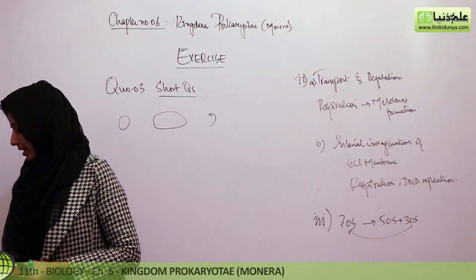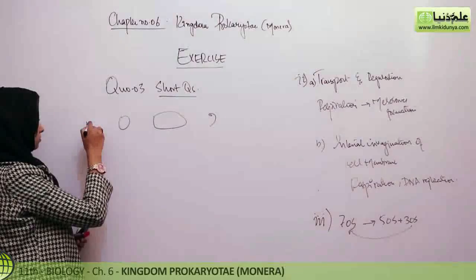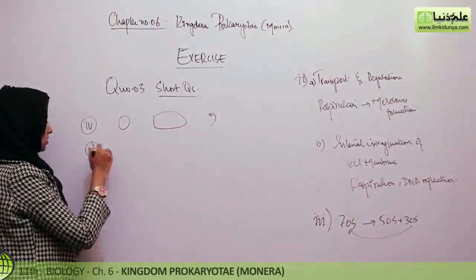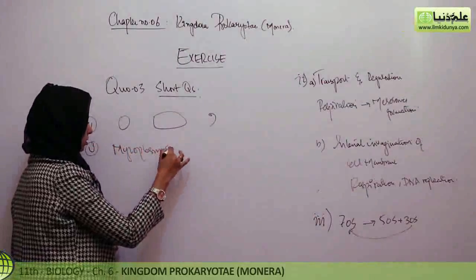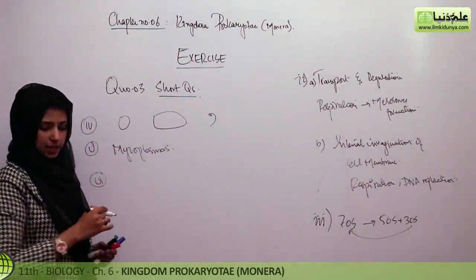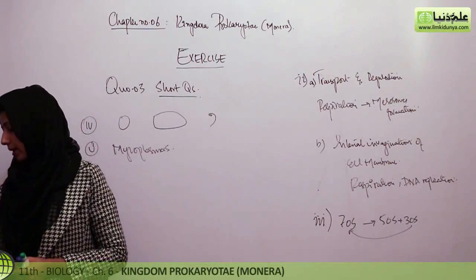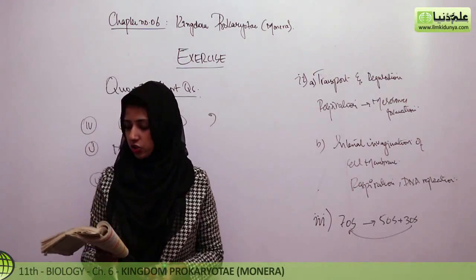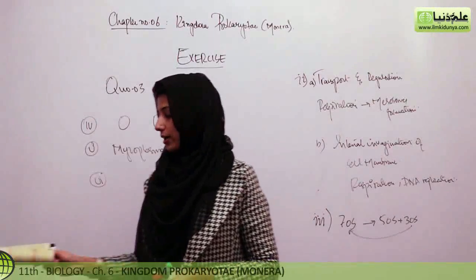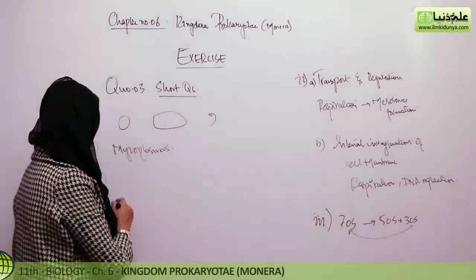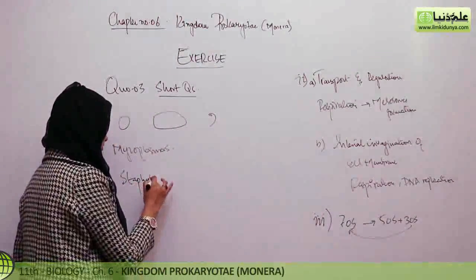Next: name a bacterium that has no cell wall. Bacteria with no cell wall are mycoplasmas — they have no cell wall at all. Sixth question: cocci in irregular grape-like clusters — those are staphylococci.